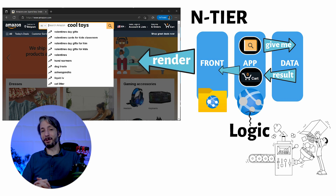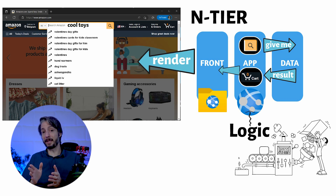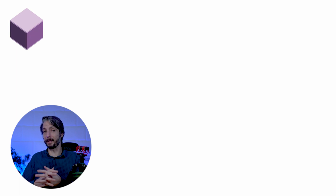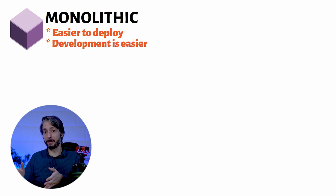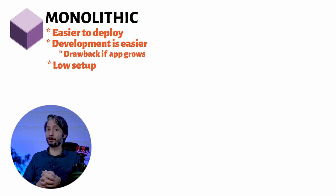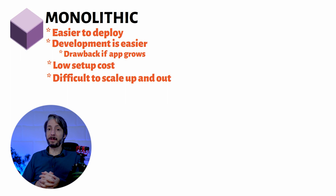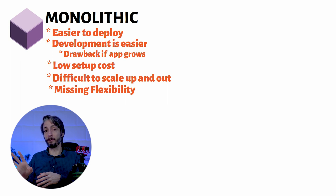There are, of course, other things going on beneath the hood of the application, but for our understanding it's enough to think of the design patterns like these. A monolithic application is usually easier to deploy, as most of the time it just contains one installable file. Development is in many cases easier as it's just one codebase — though this can be a drawback if the application grows very large. It's low cost to set up, but more difficult to scale up and out, and you lose flexibility when tied to existing tools even if new ones become available.